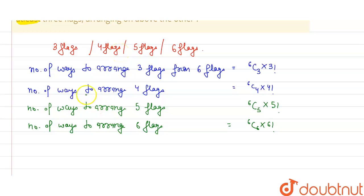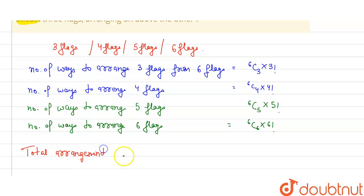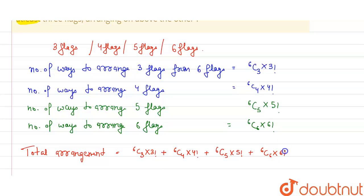We have to add all the cases using the addition rule. The total number of arrangements equals 6C3 into 3 factorial, plus 6C4 into 4 factorial, plus 6C5 into 5 factorial, plus 6C6 into 6 factorial.